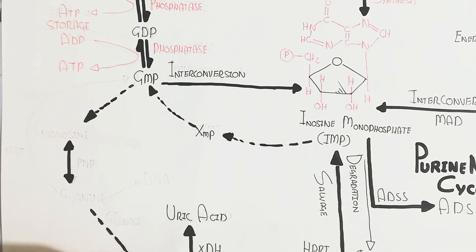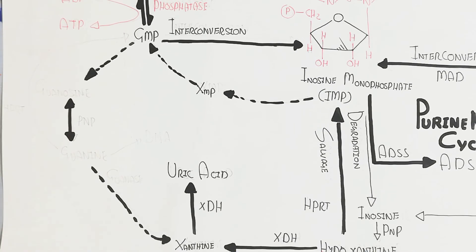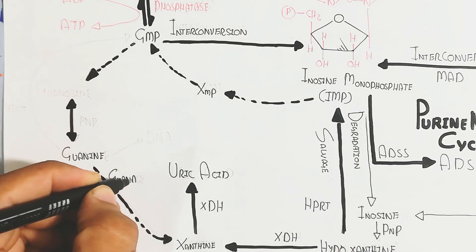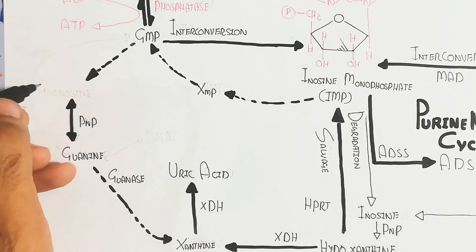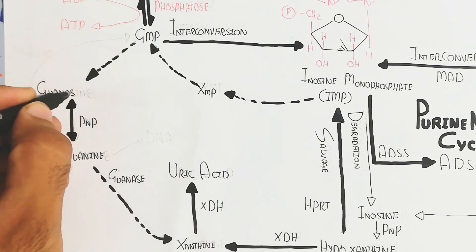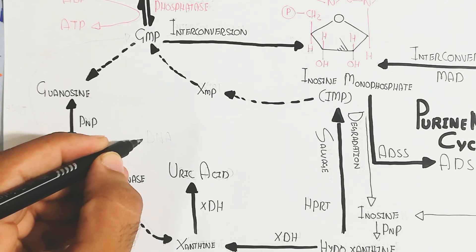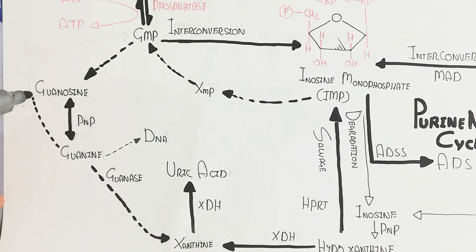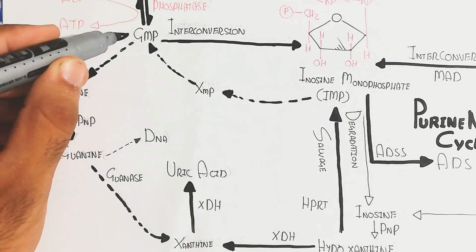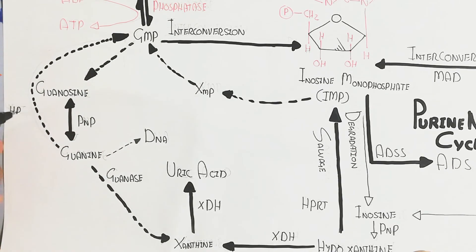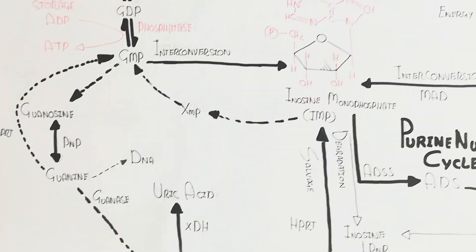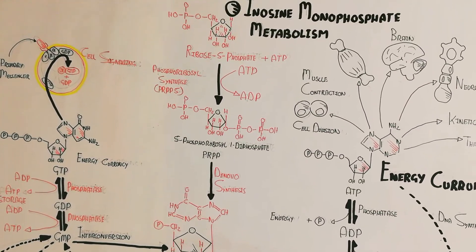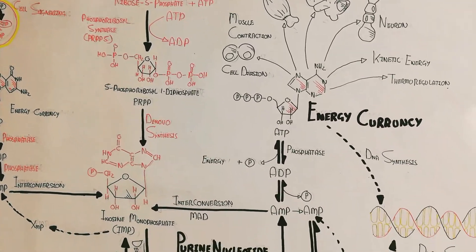Xanthine monophosphate (XMP) converts back into GMP, and the PANP enzyme produces guanosine from guanine. Guanine is important for DNA synthesis, which is why DNA synthesis is a key part of inosine monophosphate metabolism through several mechanisms. Thanks for watching — please make sure to subscribe, like, and share.